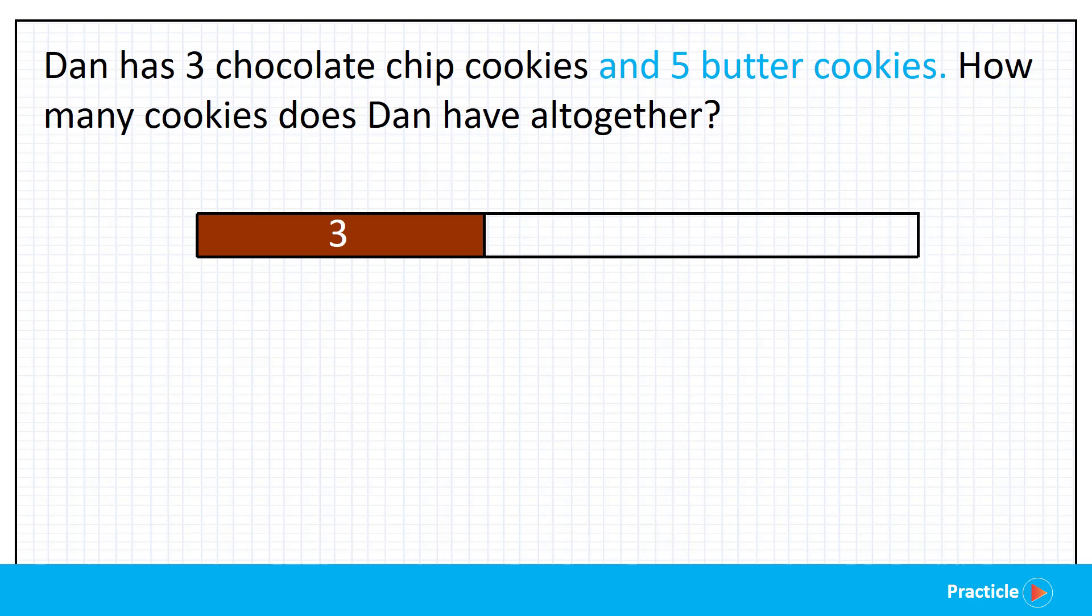And this bar, my dear friends, represents the number of butter cookies that Dan has. And since we know that he has 5 butter cookies, we are going to write 5 in the bar. So far so good?